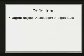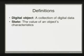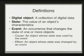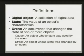Some basic definitions. An object is a collection of digital data — could be a byte, a sector, a file, or a chunk of process memory. A state is the value of an object's characteristics — like a data structure and all its different values. An event is an occurrence that changes the state of one or more objects. A cause is an object whose state was used in the event — an executable or process that caused the event to occur. An effect is the object that was changed by the event.